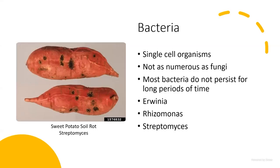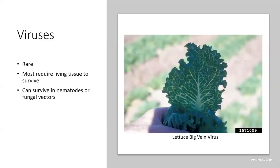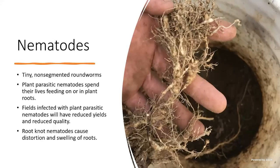Bacteria are not nearly as numerous as fungi and most do not persist for long periods of time. Common ones include Rhizomonas and Streptomyces — Streptomyces is fairly common on potato, causing potato soil rot and potato scab. Viruses are extremely rare as soil-borne pathogens; lettuce big vein virus is one you might have heard of. Most viruses need a living vector — they can survive in nematodes or fungal vectors.